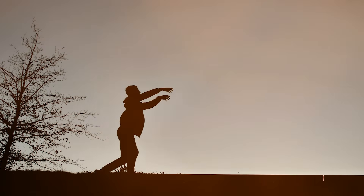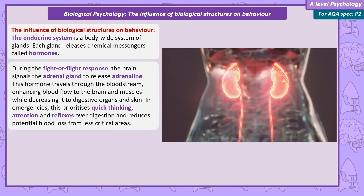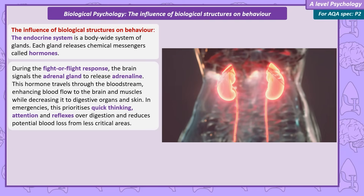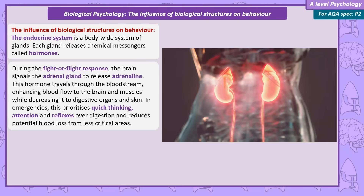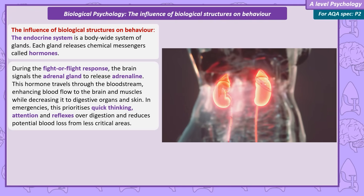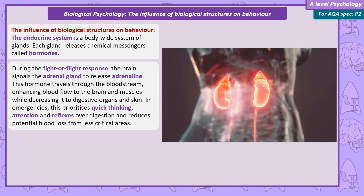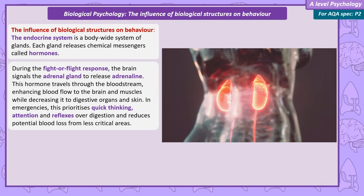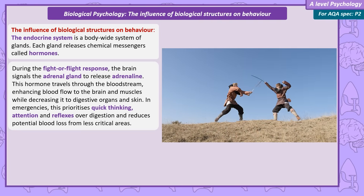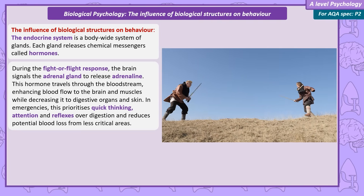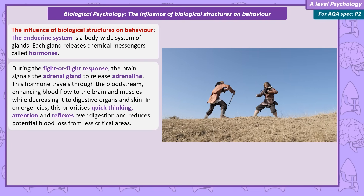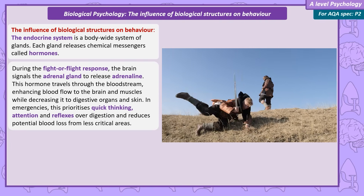The brain detects a threat and instructs the adrenal gland to release a hormone called adrenaline. This rushes across the body carried by the bloodstream. Its effects include increasing blood flow to the brain and skeletal muscles and reducing blood flow to digestion and to the surface skin, as in an emergency situation thinking and quick reflexes are more important than digestion. And if you're about to get damaged, you might as well reduce blood loss from non-critical areas.